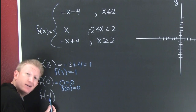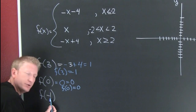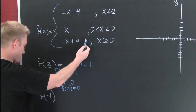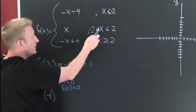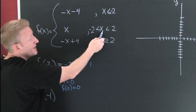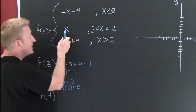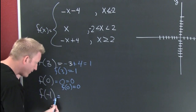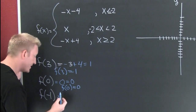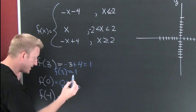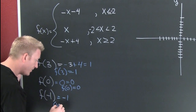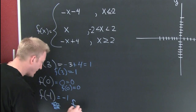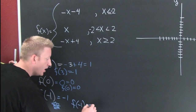Now let's find f of minus 1. Which piece are we going to use? Coming back up — where's minus 1? Is it in the first piece? No. The middle piece? Yes, because minus 1 is in between minus 2 and 2. That says I'm going to use this middle piece. Everywhere I see an x, I put minus 1. So f of minus 1 is minus 1.